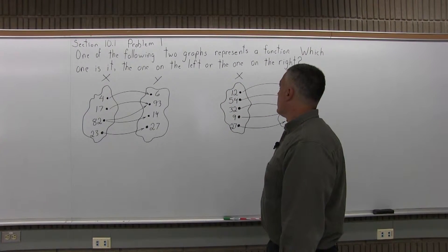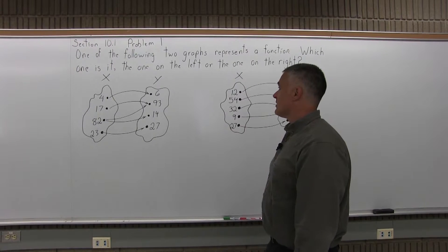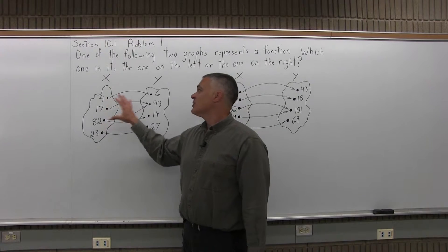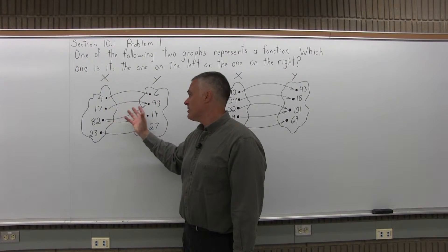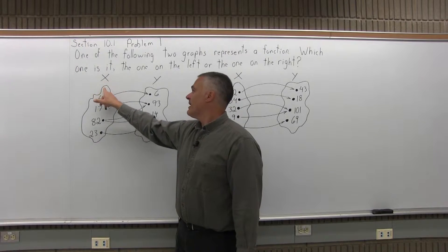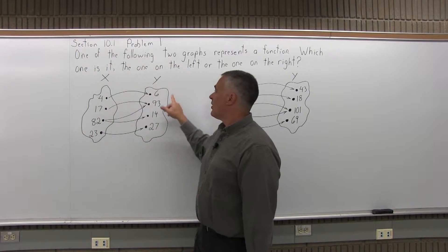It says one of the following two graphs represents a function. Which one is it? The one on the left or the one on the right? So the two graphs have like an X and Y blobby looking thing, you might call it a cloud or whatever, and it's showing you from what values of X go over to Y.